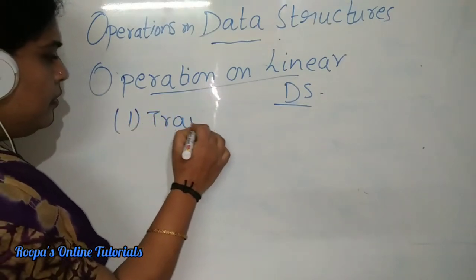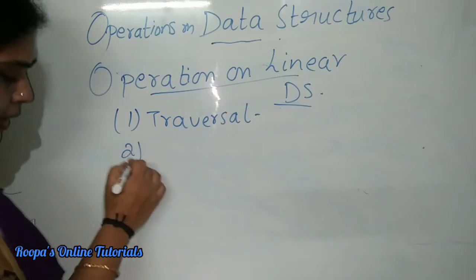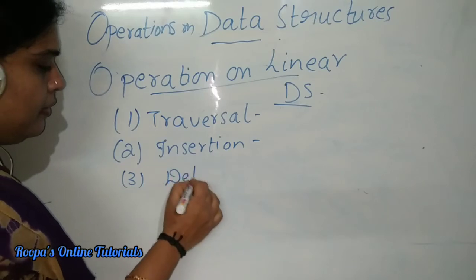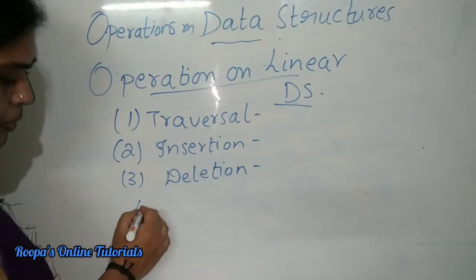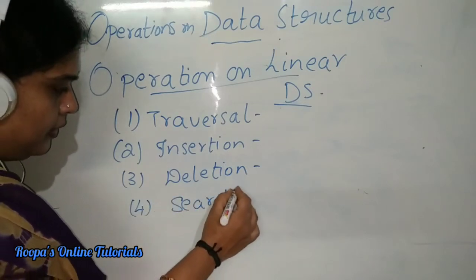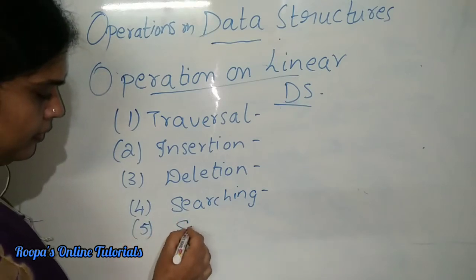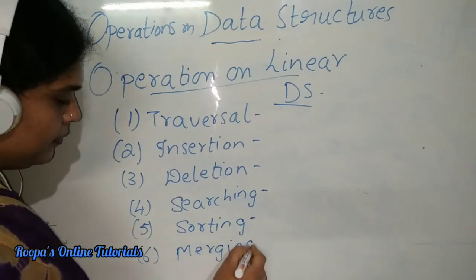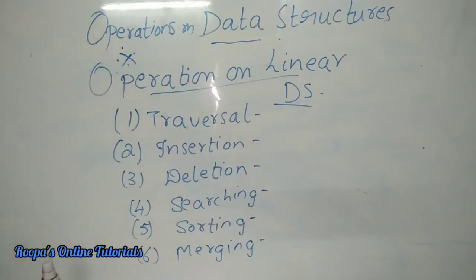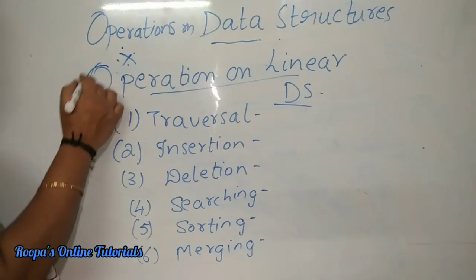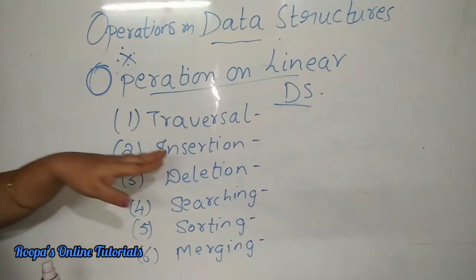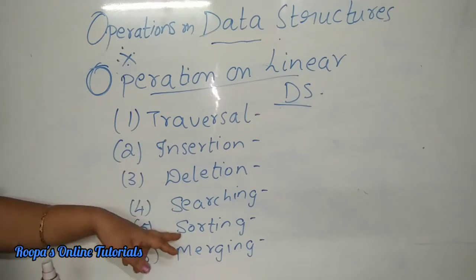The operations on linear data structures are: first, traversal; second, insertion; third, deletion; fourth, searching; fifth, sorting; and sixth, merging. Whether the question asks for operations on linear data structures or operations on arrays, the answer is the same: traversal, insertion, deletion, searching, sorting, and merging.